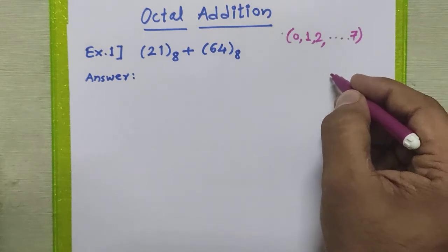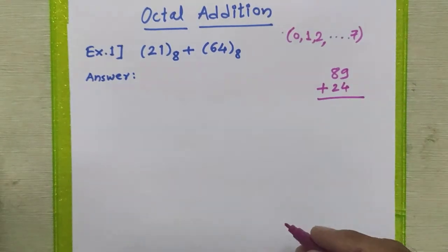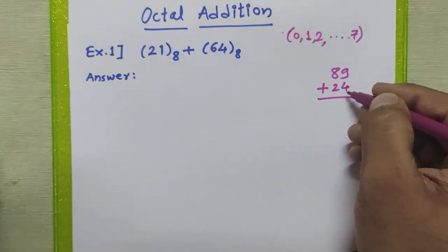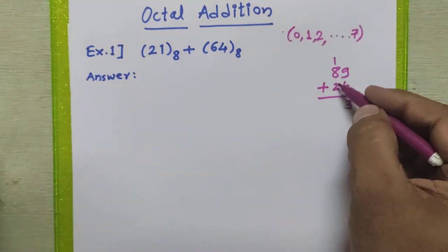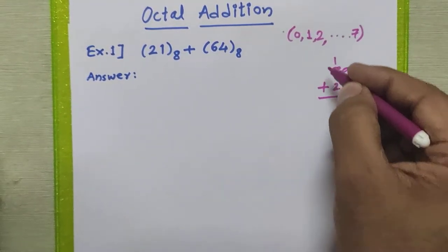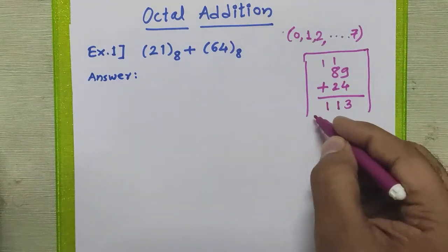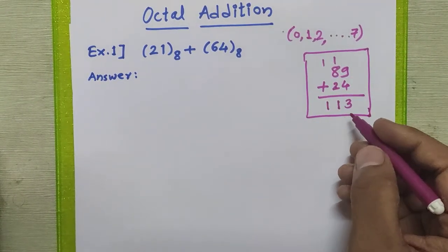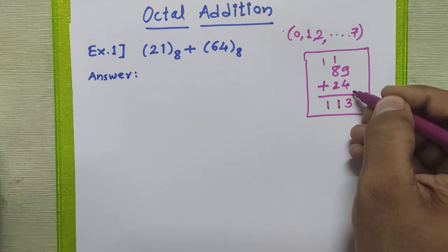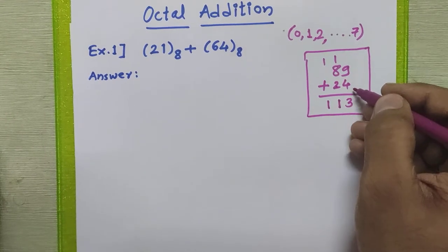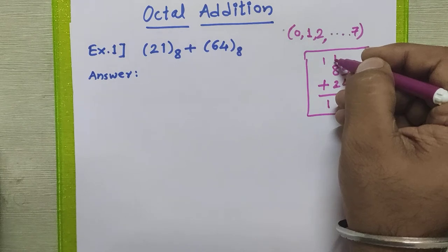In the normal way, when you solve the addition of two decimal numbers, you perform 9 plus 4, which is 13 — so you write 3 and carry 1 to the next step. Then 8 plus 2 plus 1 is 11 — write 1 and carry 1. In the decimal number system, we generate a carry only when the addition of two digits exceeds the last valid number, which is 9, and we put the carry on top of the next digit.